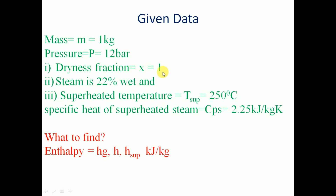Dry saturated means the dryness fraction is 1. Second case, steam is 22% wet. Third case, superheated temperature T_super is equal to 250 degree Celsius, and specific heat of superheated steam Cps is equal to 2.25 kilojoule per kg kelvin. We have to find the enthalpy for all three types of steam.